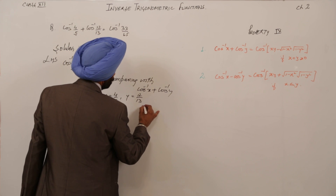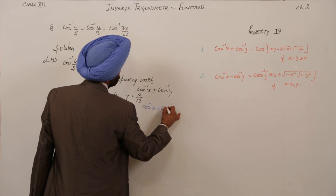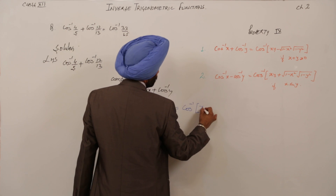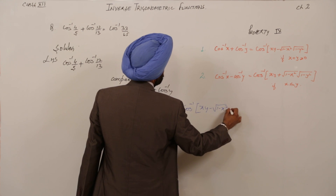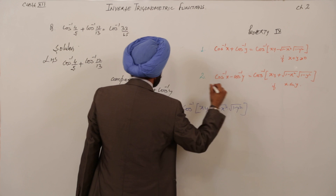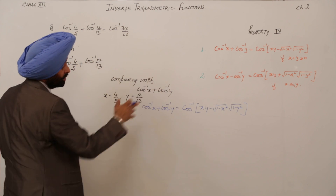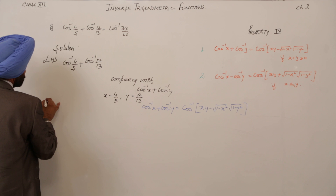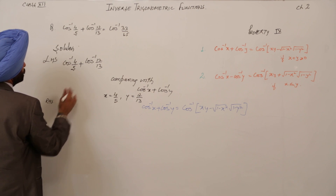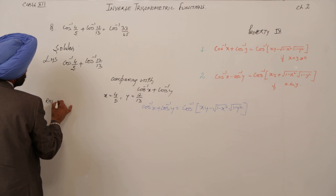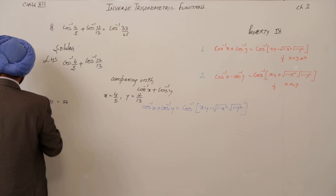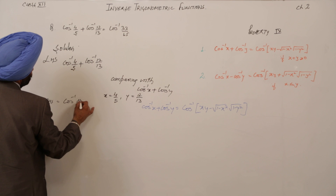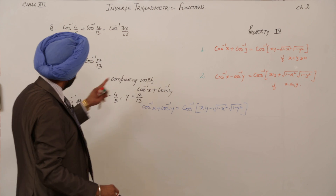You can highlight the property you are using: cos⁻¹X + cos⁻¹Y = cos⁻¹(XY − √(1−X²)·√(1−Y²)). We can now directly insert the values of X and Y. The left-hand side is our expression, and the right-hand side in the question is cos⁻¹(33/65). Let's check whether using this property we can arrive at that term.